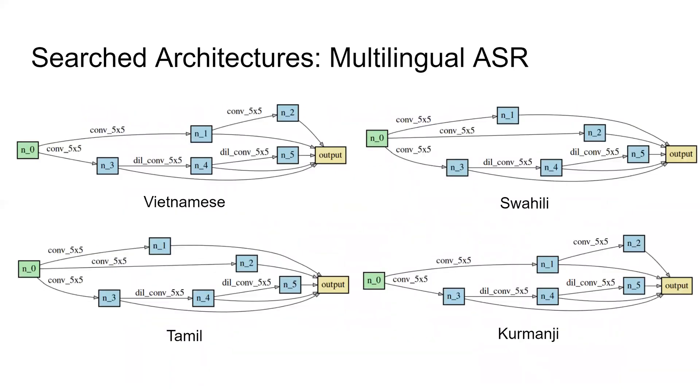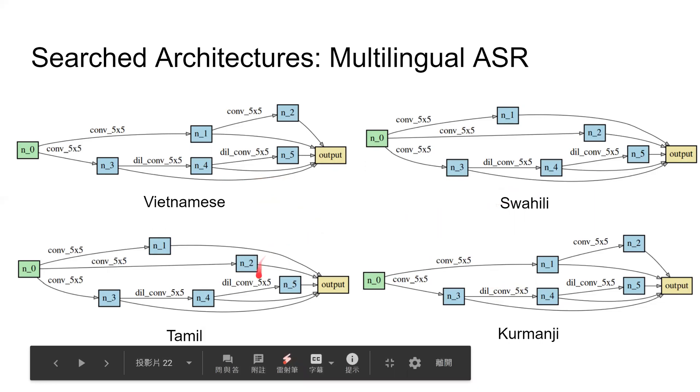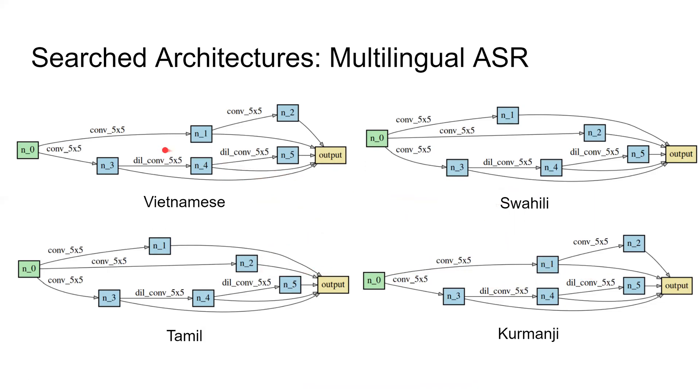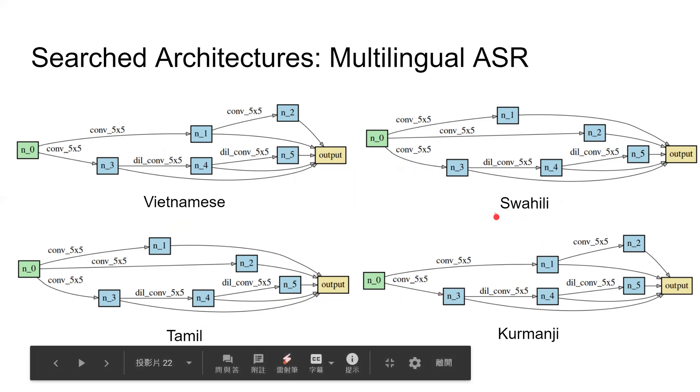Here, we also plot the searched architectures of DARTS-ASR on four target languages. For multilingual ASR, all of the four searched architectures are quite similar. Convolutions with larger kernel sizes are dominant. Here, they are all five by five. Similarly, dilated convolutions are dominant in deeper architectures. This result shows that this kind of architecture is the architecture generally suitable for a wide range of languages.